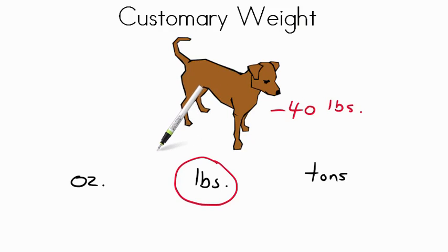Today, we've been practicing customary weight and figuring out which choice we'd use for weighing: whether we use ounces for very small things, pounds for medium-sized things, or tons for really large things. Great job, and I can't wait to talk to you more about math soon.